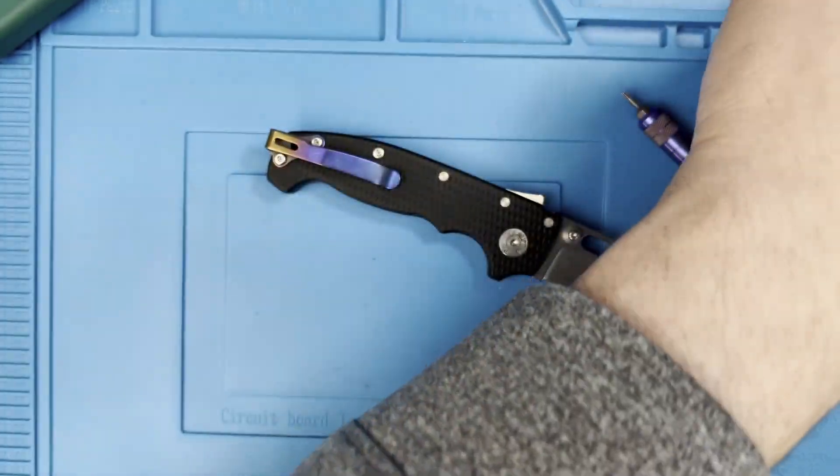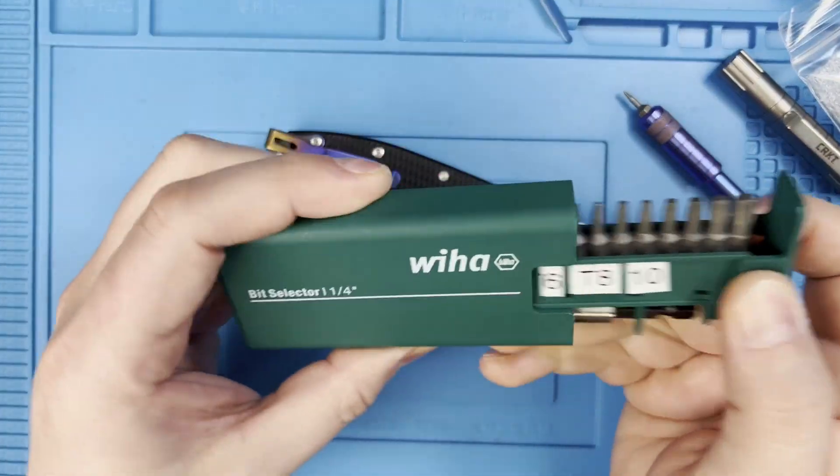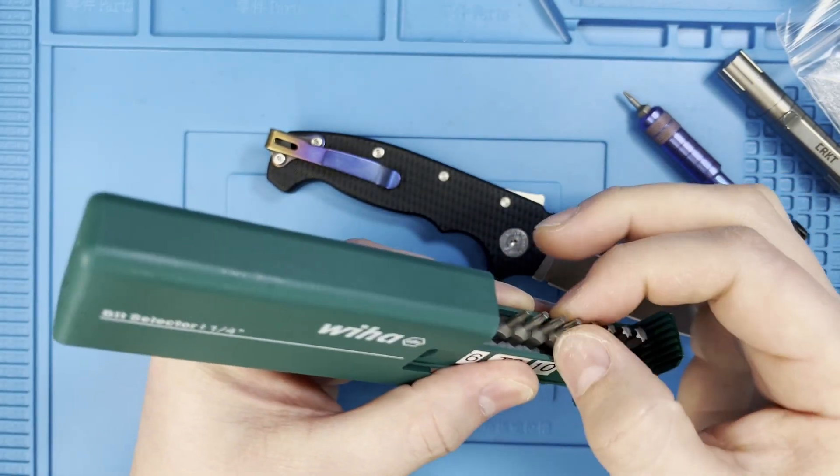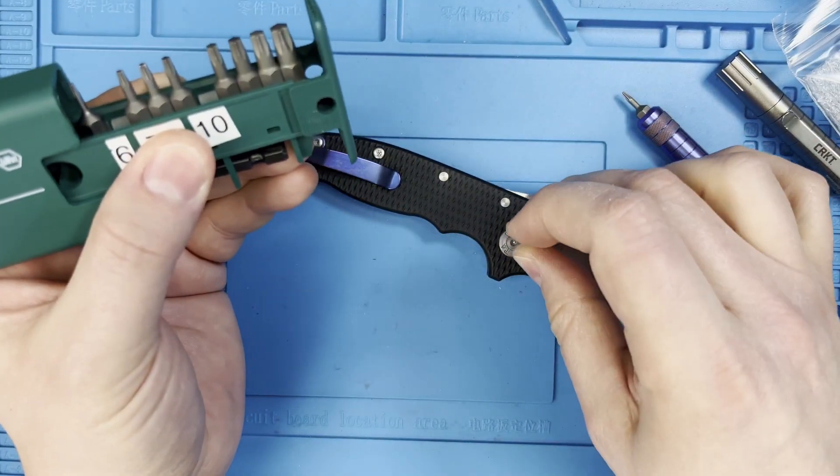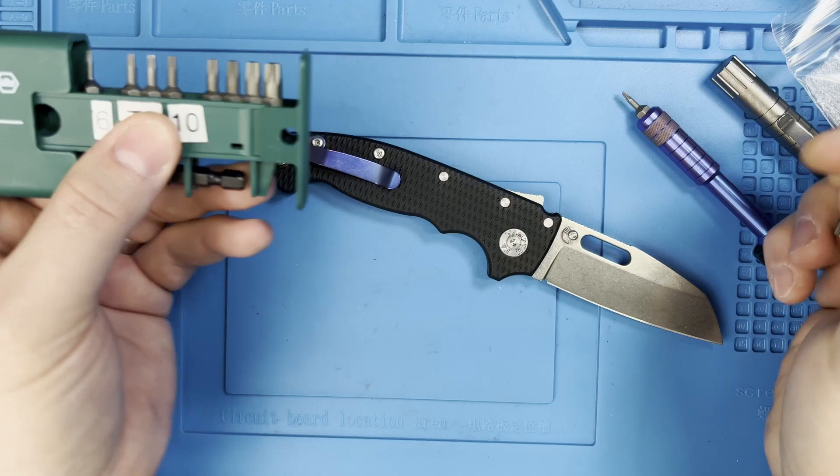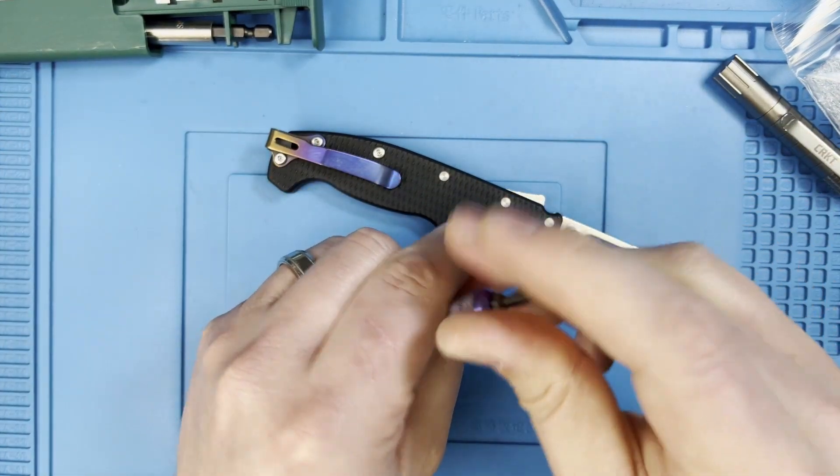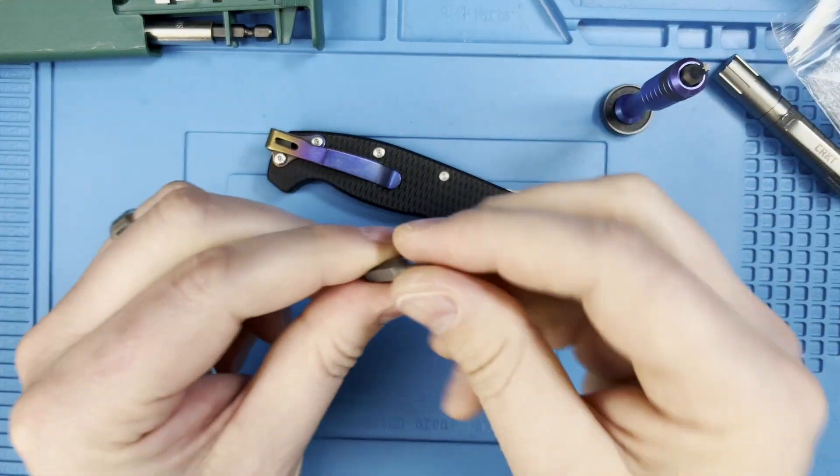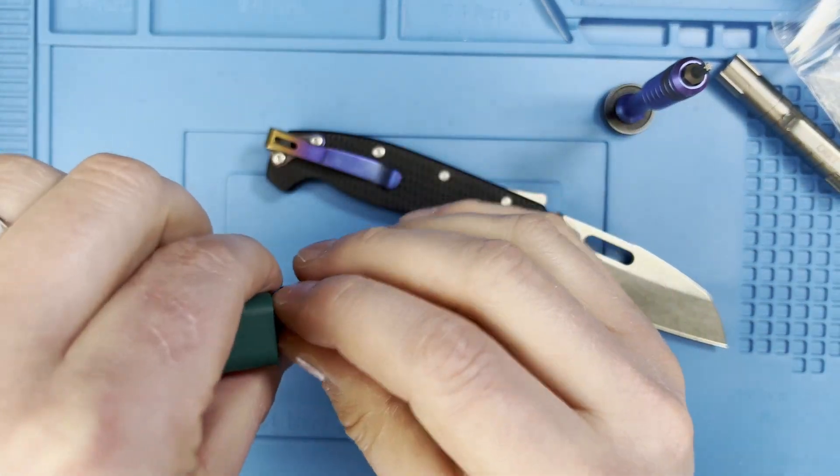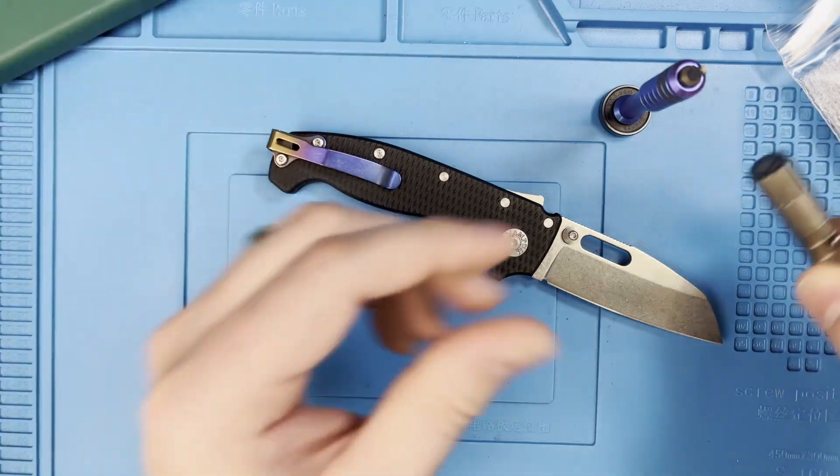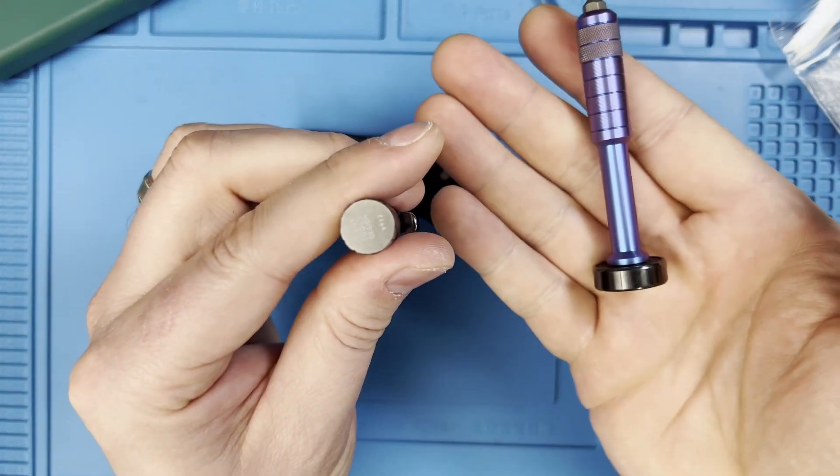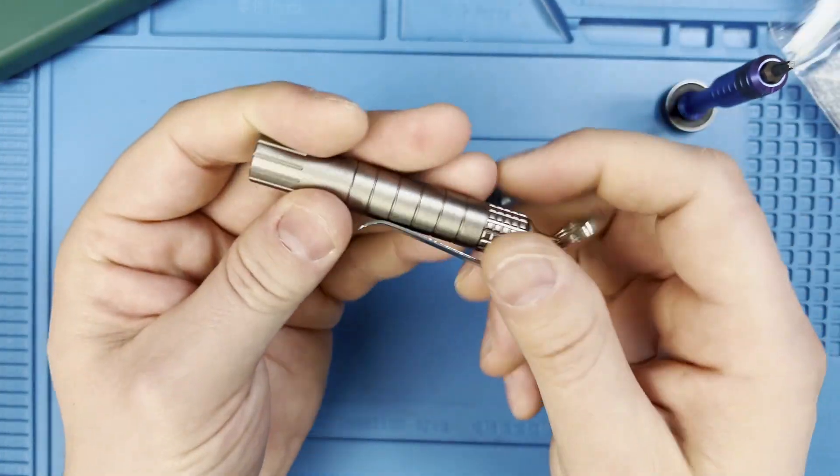So before I jump into that, I do have my Wiha bits out here. I do believe the pivot is T10. Yep, so we'll need the T10 for the pivot and I believe everything else is T8.